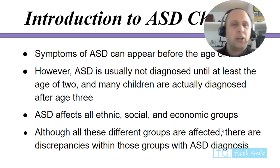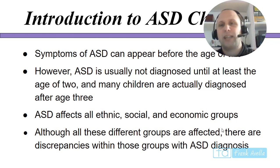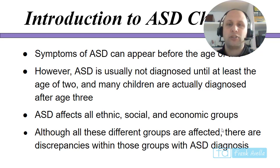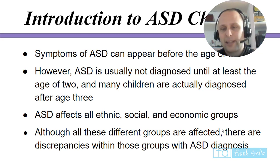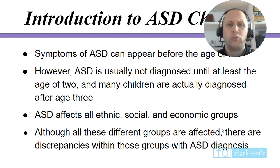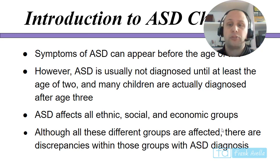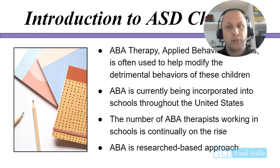Symptoms of ASD can appear before age two; however, ASD is usually not diagnosed until at least age two, and many children are actually diagnosed after age three. ASD affects all ethnic, social, and economic groups — it's not targeted at one specific group. Although all these different groups are affected, there are discrepancies within those groups with respect to ASD diagnosis.